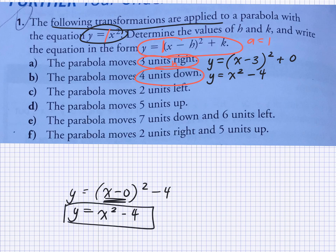So if it goes two units to the left, Y is equal to bracket X plus 2 squared plus zero. And then five units up: Y is equal to X squared plus 5.